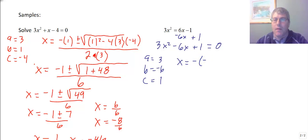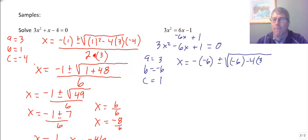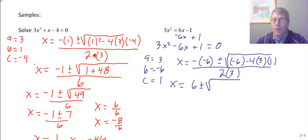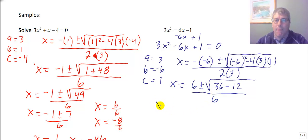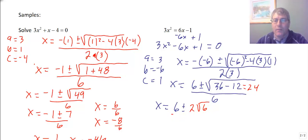Substituting into the quadratic formula: x equals the opposite of b — that's the opposite of negative 6 — plus or minus the square root of b squared minus 4ac, all over 2a. So x equals 6, plus or minus the square root of negative 6 squared, which is 36, minus 12, all over 6. That gives us the square root of 24, which simplifies to 2 times the square root of 6, all over 6.